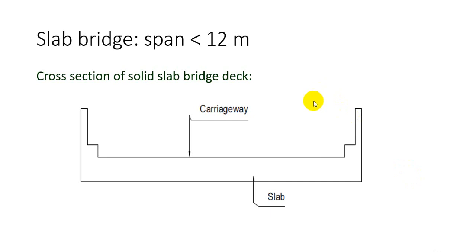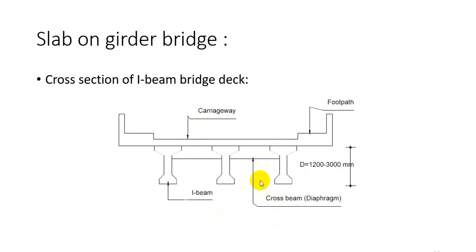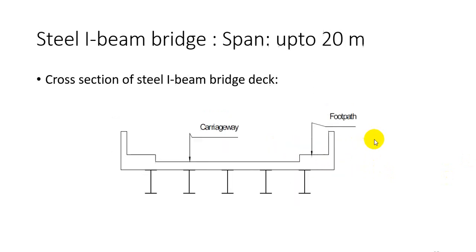Slab bridges are generally constructed for spans less than 12 meters — the cross-section shows the carriageway and slab. T-beam bridges are generally cast for spans of 12 to 24 meters; the cross-section shows the T-beam and cross beam with carriageway, with beam depth of 1200 to 1800 mm. Slab-on-girder bridges have girders with a slab above. Box girder bridges are mostly used for flyovers and other bridges. Steel I-beam bridges have steel beams below with the carriageway above.